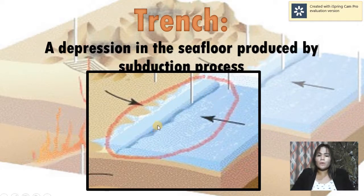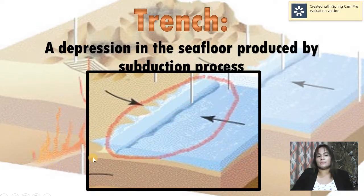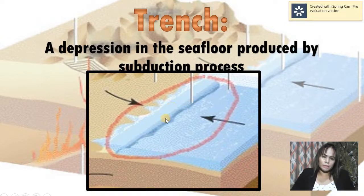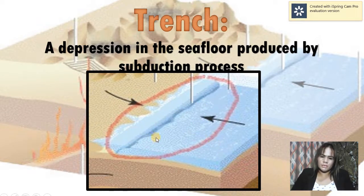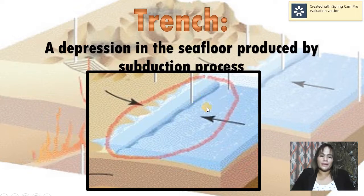The subduction is the moving of one plate over the other, and this forms the trench between the two different plate boundaries — a narrow depression in the seafloor produced by a subduction process. As we all know, the deepest trench on Earth is the Mariana's Trench.